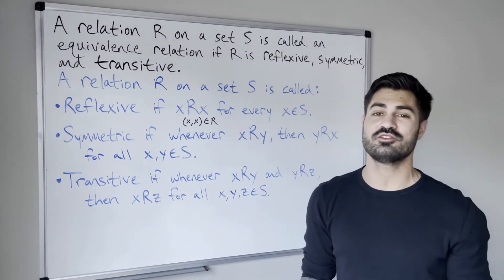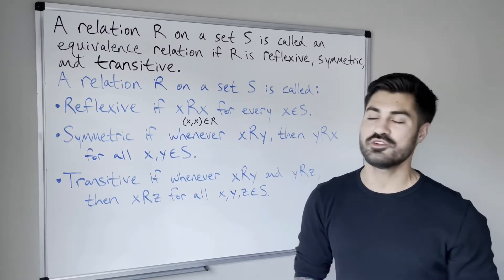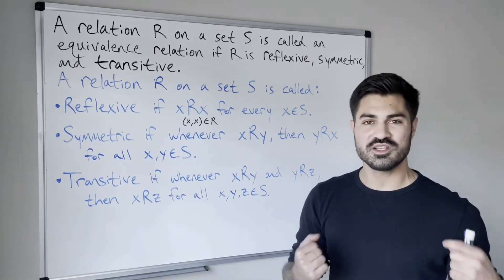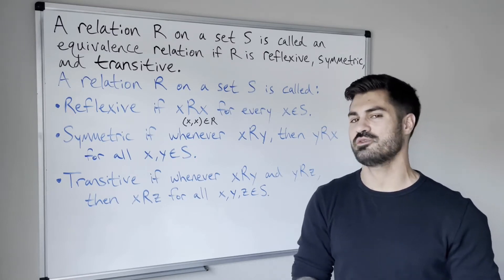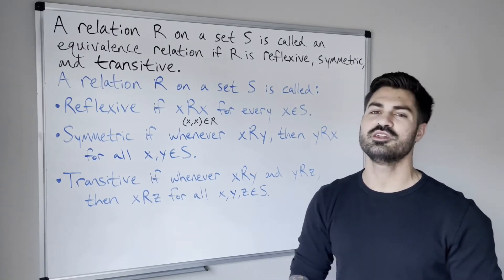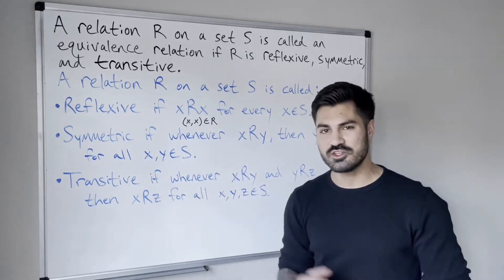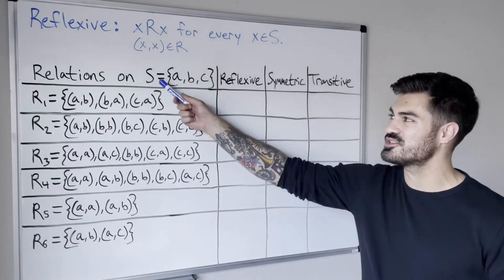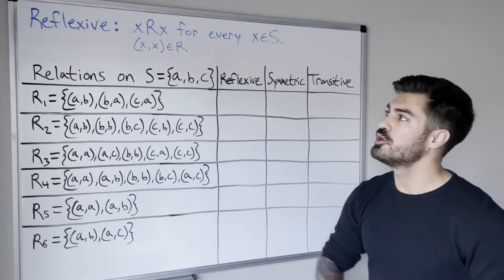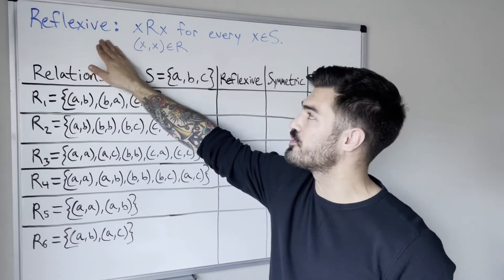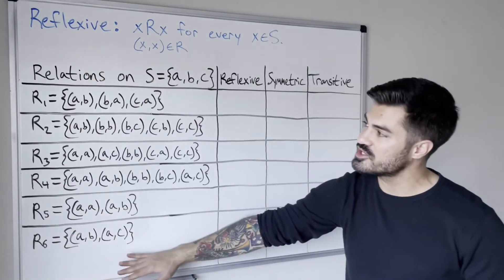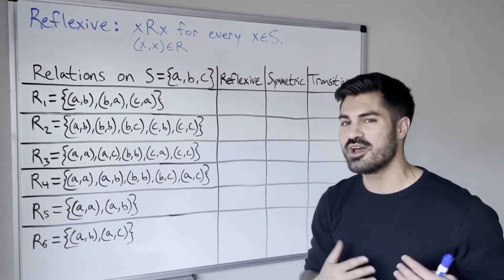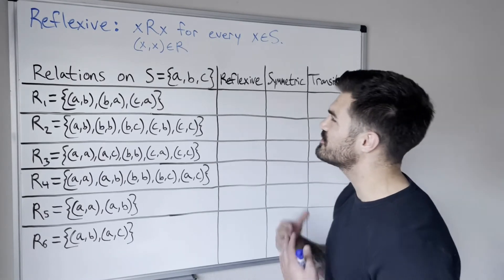This is very non-trivial — it's not easy to learn at the beginning. We're going to look at six different relations, and for each one we're going to determine: is this relation reflexive? Is it symmetric? Is it transitive? I've defined six different relations on the set S = {A, B, C}. We're going to look at one property at a time, starting with reflexive. I think reflexive is the easiest to check for.